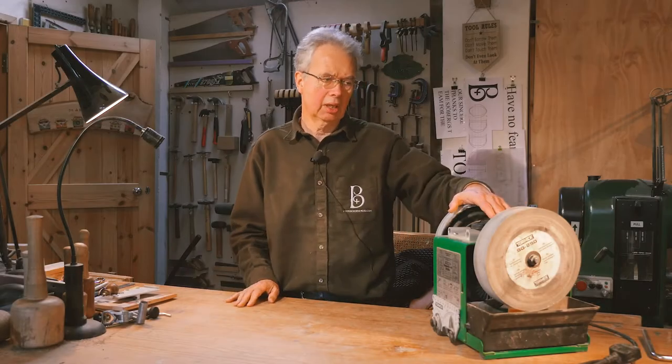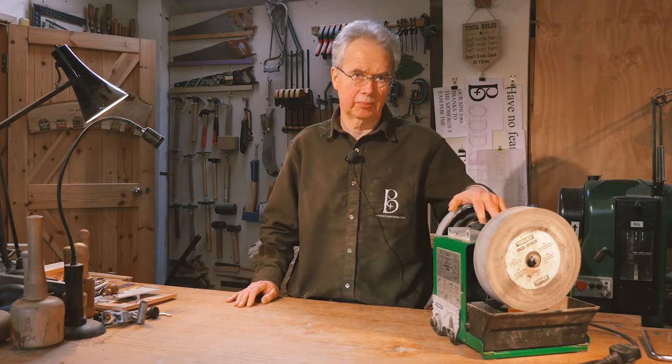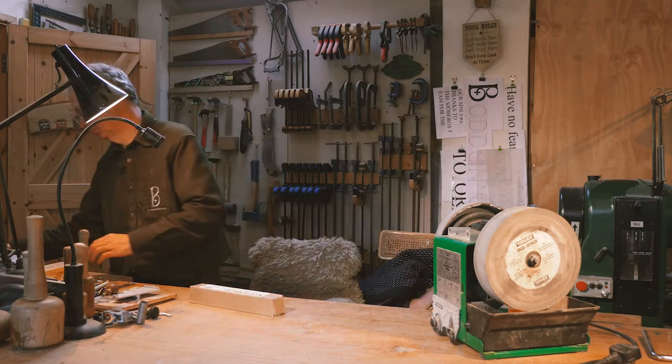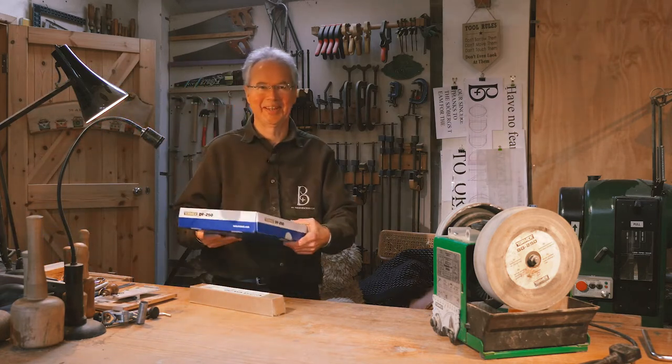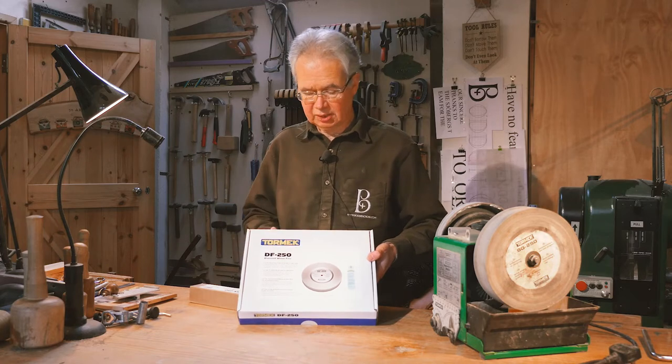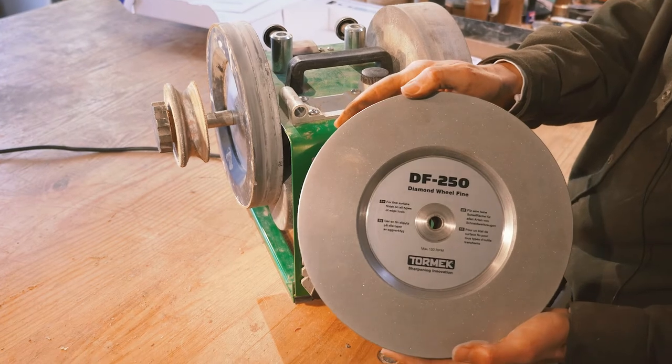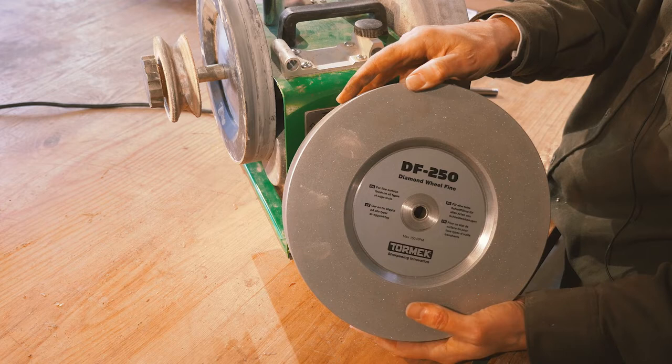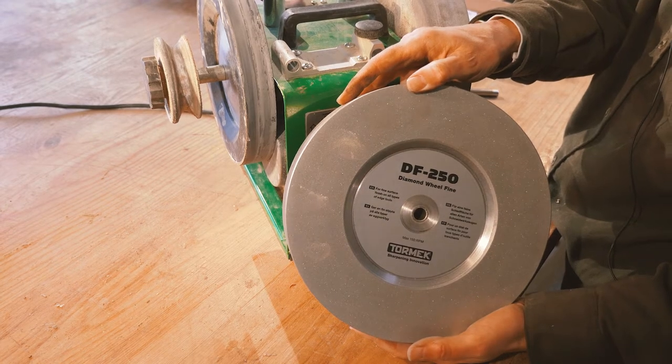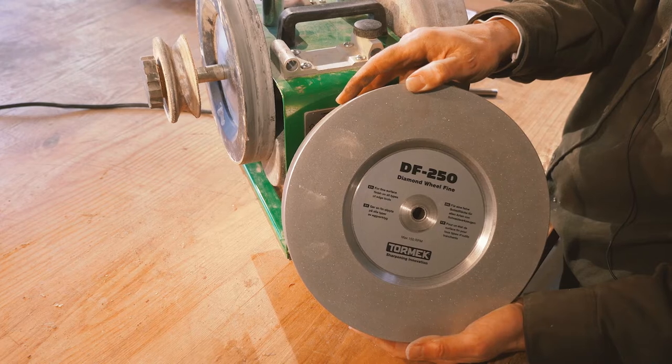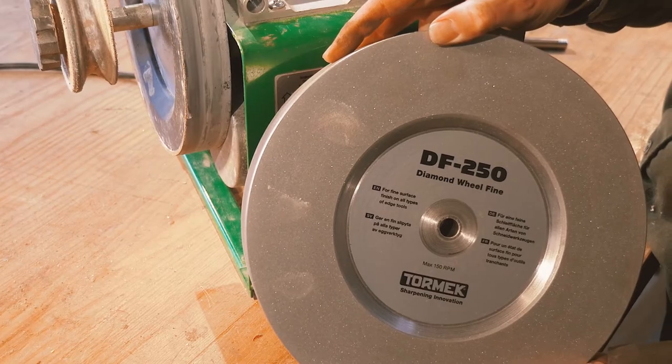One of the latest upgrades that's come from Tormek has been their new Diamond Stones, and I have one. It's a bit of an investment, but I think it's going to be worthwhile. This one is in the middle range, so they have three different grades. I've got one that's in the middle grade because I need the versatility of being able to reshape some of my woodturning tools and sharpen them quickly in a hurry.